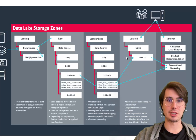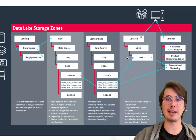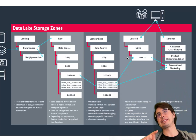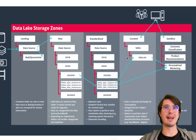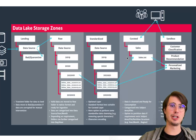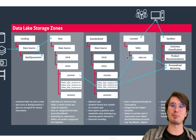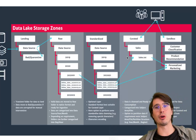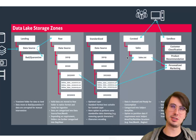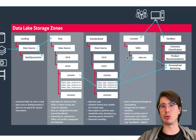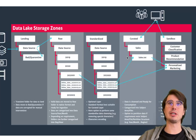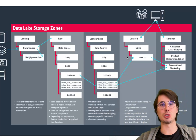That brings us to the curated and processed zone. Data in this zone has been heavily processed and optimized for analytics, and may include things like aggregations, summaries, and enriched datasets, each tailored to specific use cases — like pre-calculated metrics or data tailored for machine learning models. This is where you have ready-to-use data for data scientists and anyone that's a downstream consumer of data.